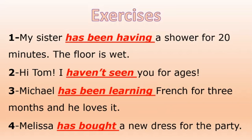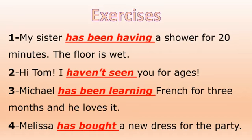Number three: 'Michael has been learning French for three months and he loves it' — present perfect continuous because 'he loves it' is present tense, still happening now. Number four: 'Melissa has bought a new dress for the party' — we use present perfect simple because Melissa finished the action; she chose her dress and bought it. It's a finished, completed action.